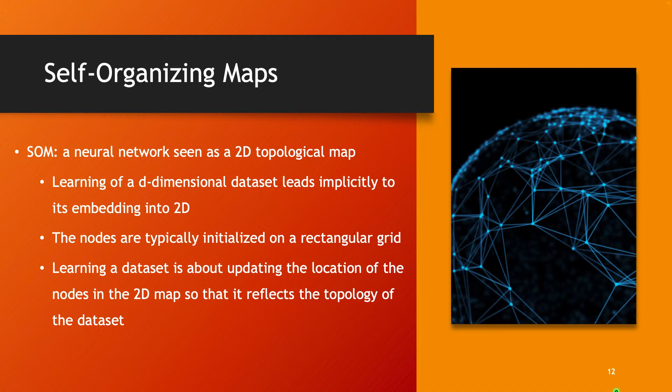The nodes of a self-organizing map are typically initialized on a rectangular grid, though other grid structures are also possible. Learning this dataset is about updating the location of the nodes in this 2D map in such a way that it reflects the topology of the dataset.